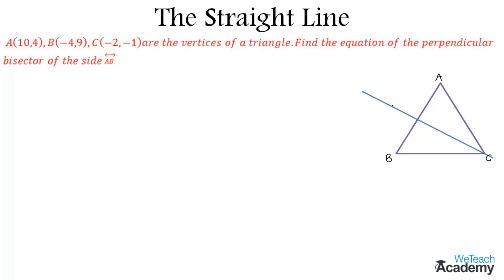Let us consider the bisector line and name this as line L. The line intersects AB at this point, which is the midpoint of line AB, given by the formula (x1 + x2)/2, (y1 + y2)/2. By considering this point as x1, y1, we get (10 + (-4))/2, (4 + 9)/2.